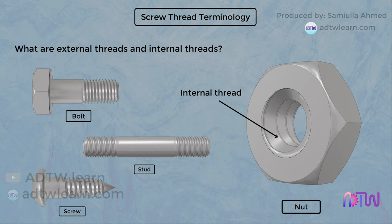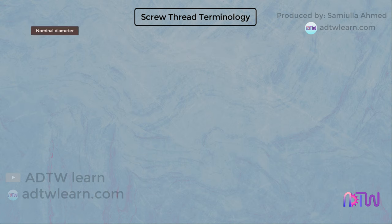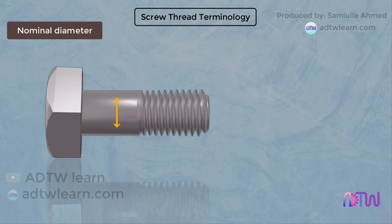When researching different types of screw threads, you will encounter some basic terms. Let us understand these terms. Nominal Diameter: the diameter of the shaft on which the screw is cut is called the nominal diameter.